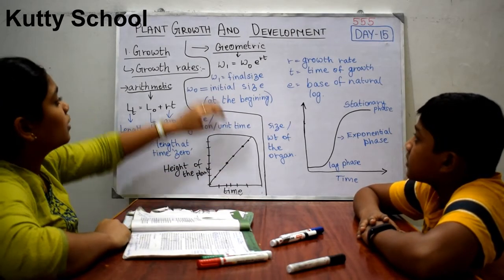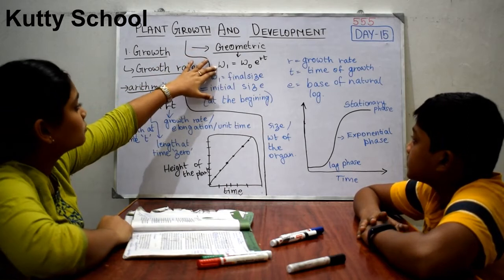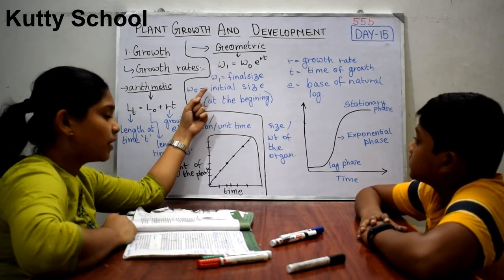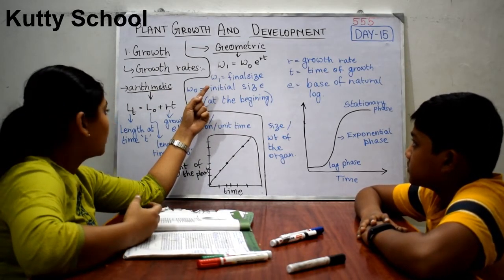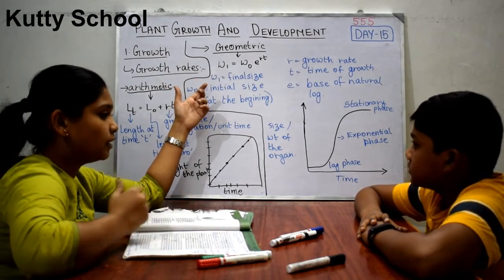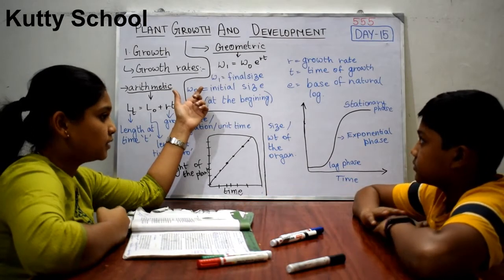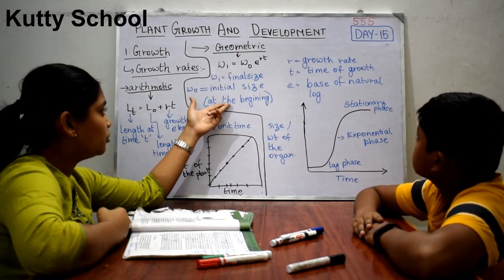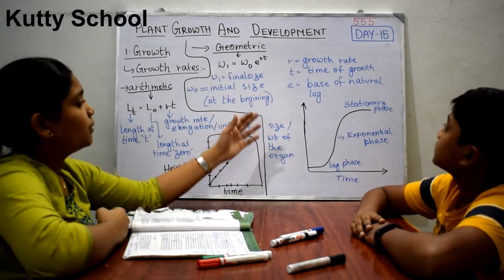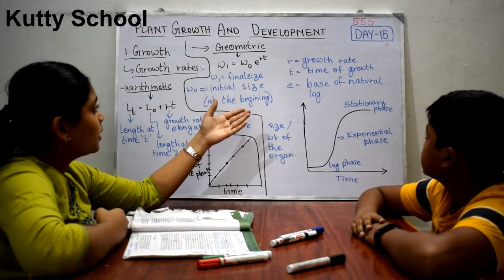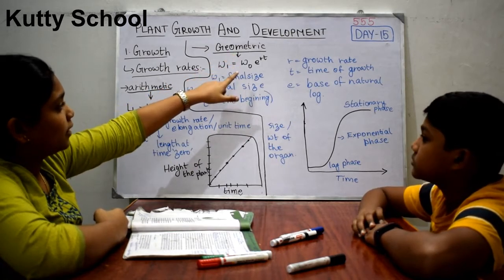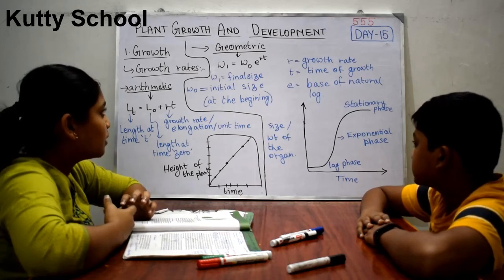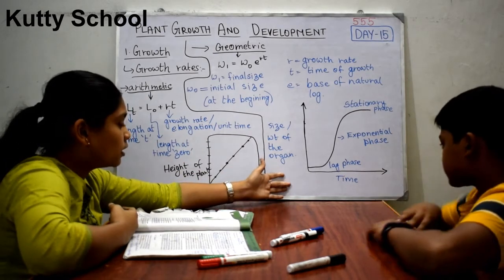In geometric growth the equation is W1 = W0 × e^(RT), where W1 is the final size at time t, W0 is the initial size, e is the base of the natural logarithm, R is the growth rate, and T is the time of growth. By substituting all these values we can predict geometric growth.